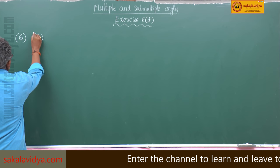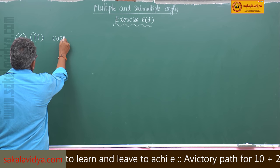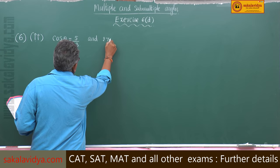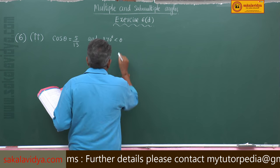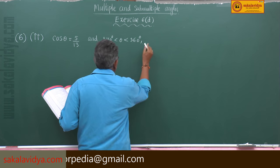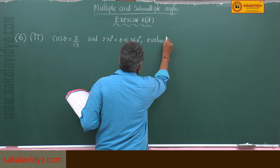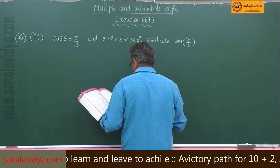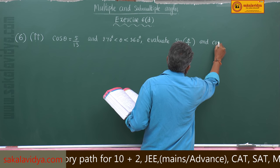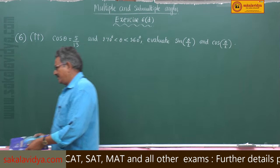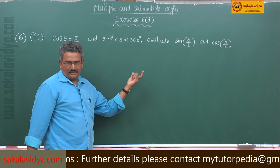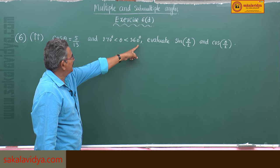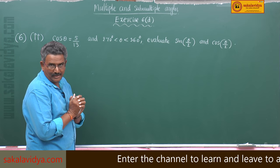Sixth problem: cos θ = 5/13, and 270° < θ < 360°. Evaluate sin(θ/2) and cos(θ/2).